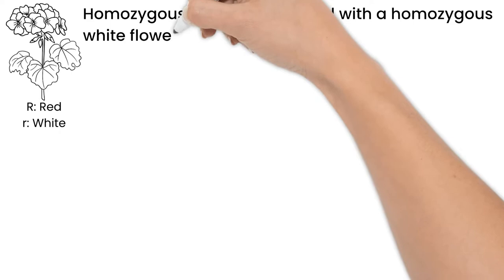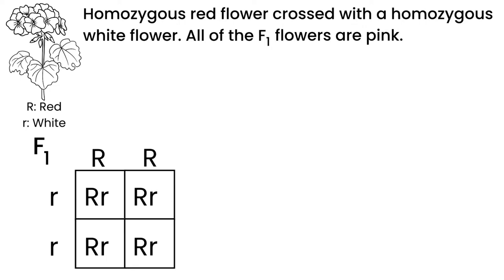Let's say we cross a homozygous red flower with a homozygous white flower. All of the F1 flowers grown are pink. This does not fit with what we've learned so far.